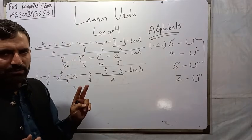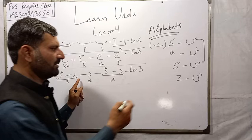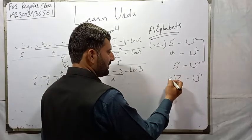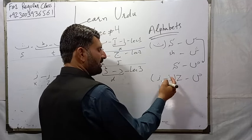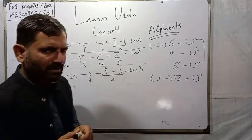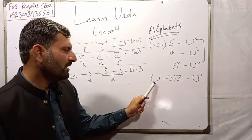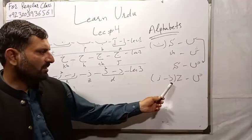We have learned in third lecture two letters of Urdu have same sound: Ze and Zay. Ze also sounds as Z, Zay also sounds as Z. All three letters have same sound.